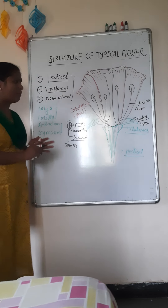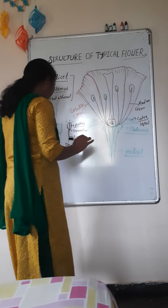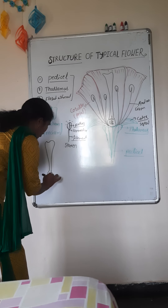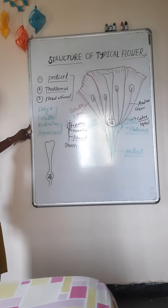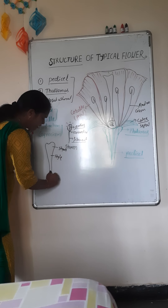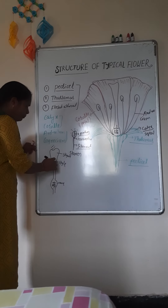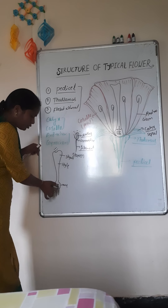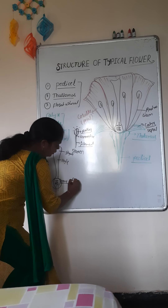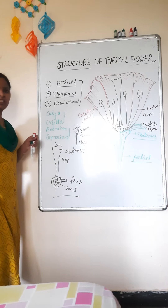The last and innermost whorl of the flower is the gynoecium. The gynoecium is the female reproductive part. The individual part of the gynoecium is called the pistil or carpel. The pistil consists of three parts: the stigma, the style, and the ovary. The stigma receives the pollen grain for fertilization. The style allows the pollen grain to travel toward the ovary. After fertilization, the ovary converts into the fruit, and the ovules convert into the seeds. Thank you.